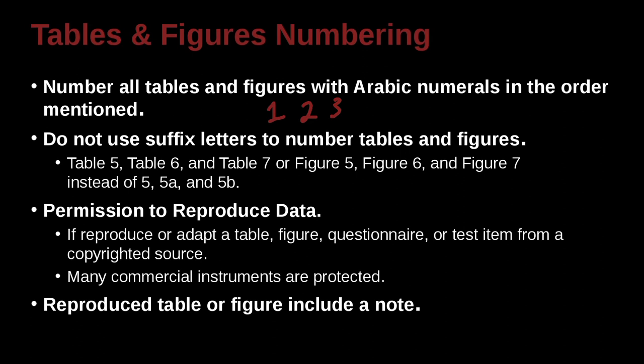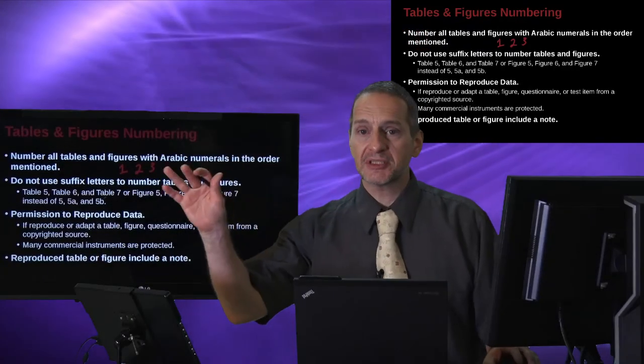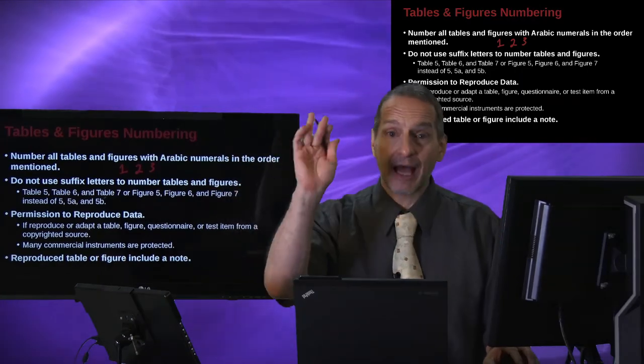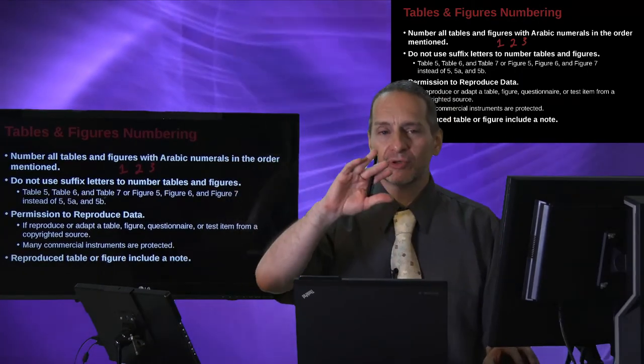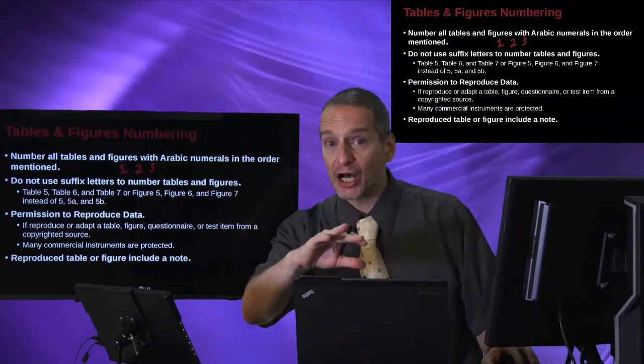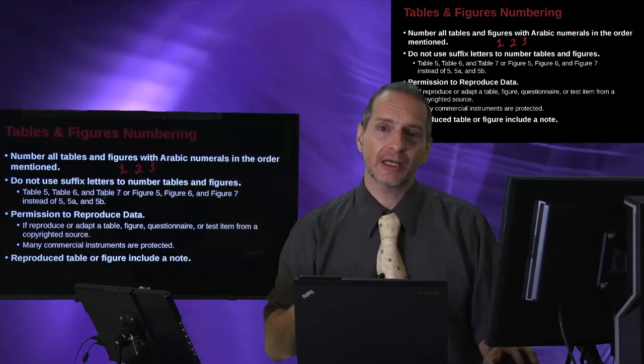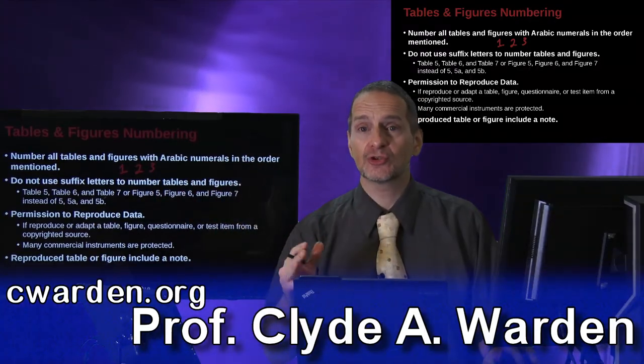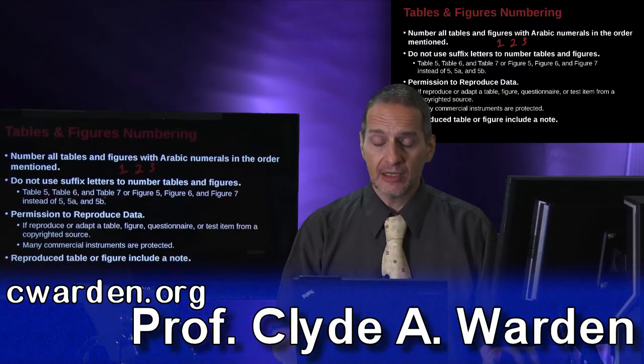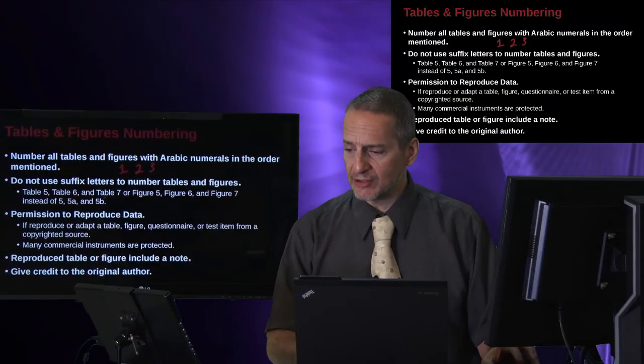So what's the minimum you need to do? Minimum is you need to include a note. And a note will do what? A note will say something like, this table is adopted from, or this table is an adaptation of, and you label who did it come from, what was the article it came from, what was the journal, who was the author, that kind of thing. That's the minimum you need to do.